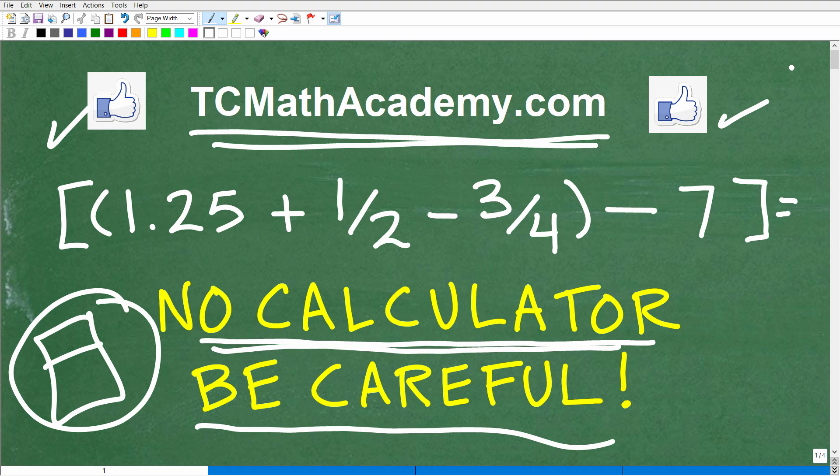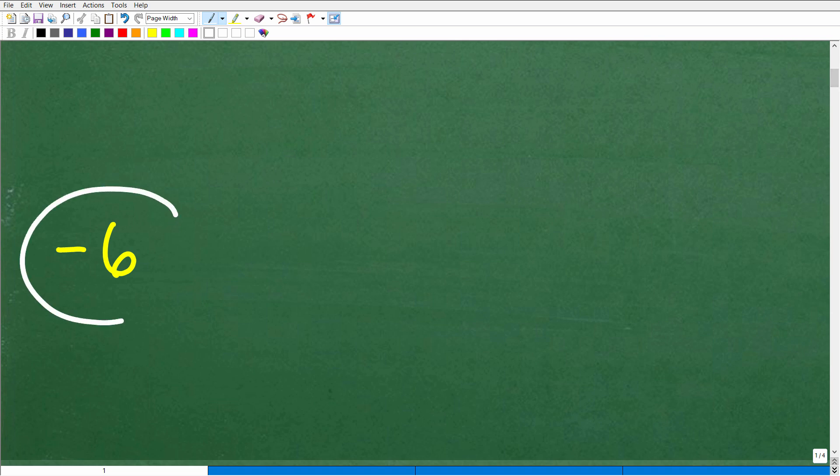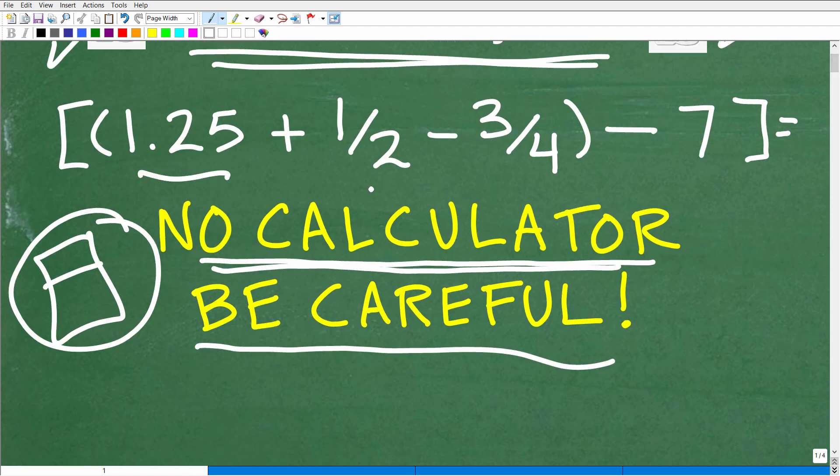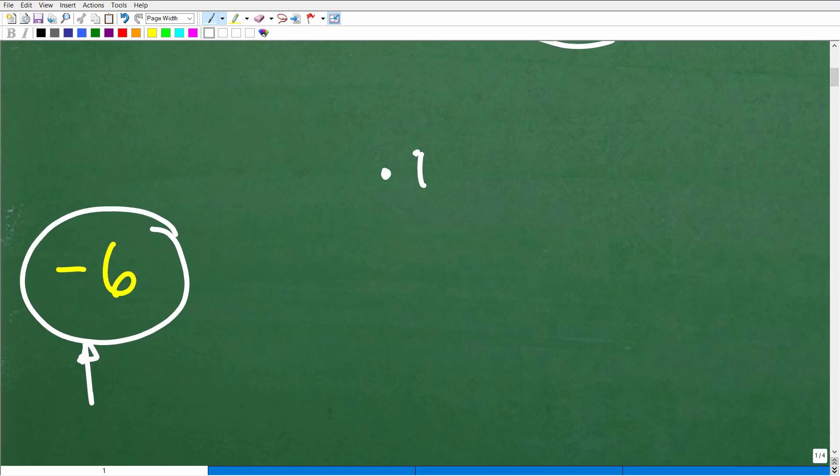Okay, so let's take a look at the answer. The answer is negative 6. So we have a negative number, and we have decimals, fractions, and a negative number here. You're going to need to know something about decimals, fractions, and positive and negative numbers.